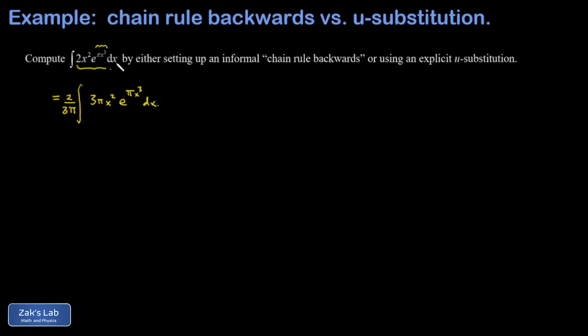With the derivative of the interior function sitting right next to e to that function, we can just guess the anti-derivative. Now it's just e to the πx³, and don't forget your plus C. That's it.